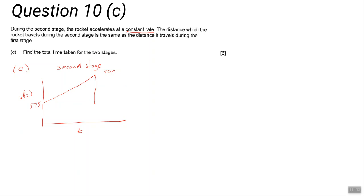We need to find this distance here. We know this distance is the same as in part b, so we know this area. What we need to find is the value of t that gives us that particular distance.